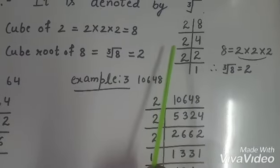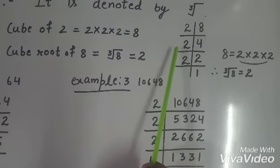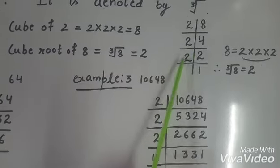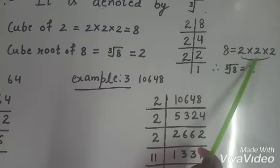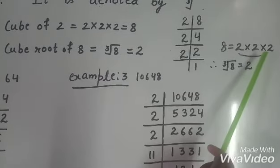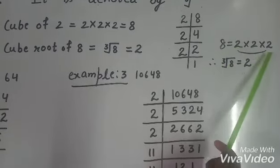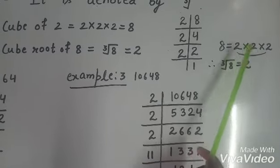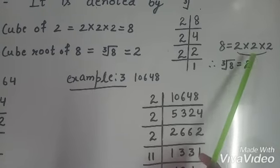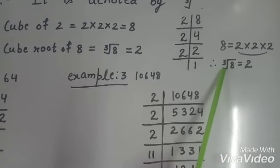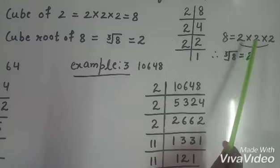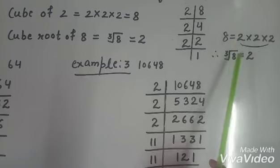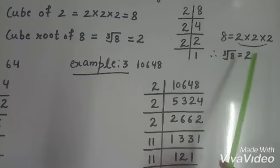First of all find out the prime factorization of 8 is 2, 2, 2. 8 equals to 2 × 2 × 2. 2 is repeated 3 times. Therefore this group is a triplet. But we take only one 2 which is cube root of 8. We have to take only one number in triplet. Cube root of 8 is 2.